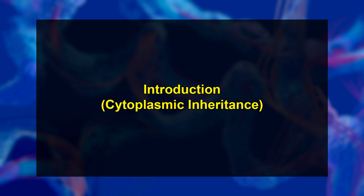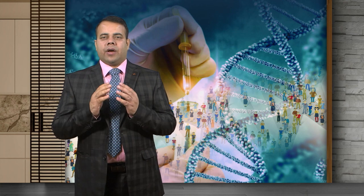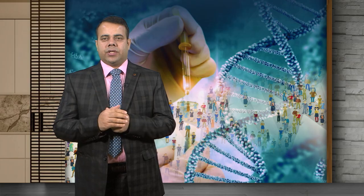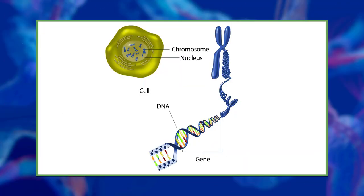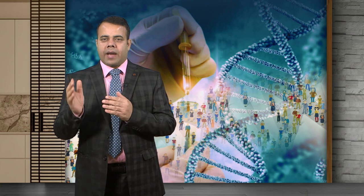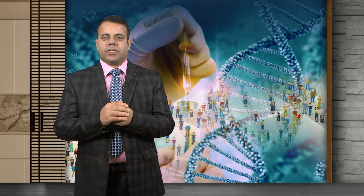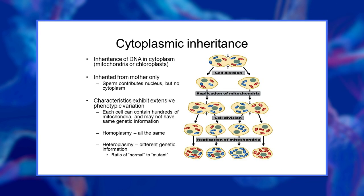Let's first begin with the introduction to cytoplasmic inheritance. As we know, most of the characters of an individual are governed by nuclear genes. However, some of the traits may be controlled by extranuclear factors or genes. When the transmission of characters from parents to offspring is governed by cytoplasmic genes, it is known as cytoplasmic inheritance, or extranuclear inheritance, or extrachromosomal inheritance, or also known as non-Mendelian inheritance.